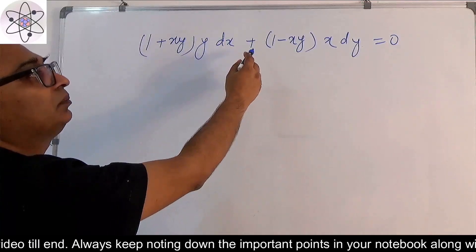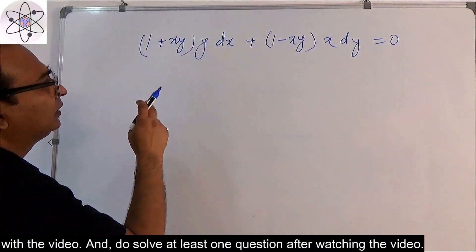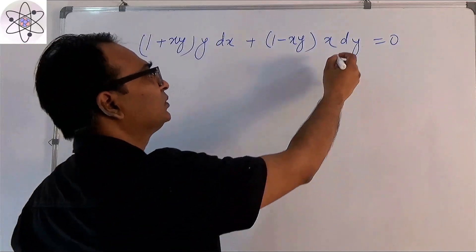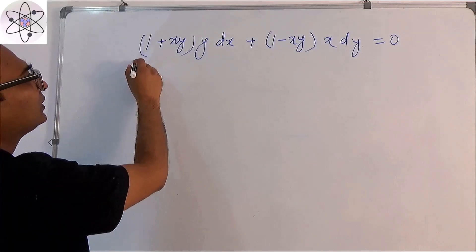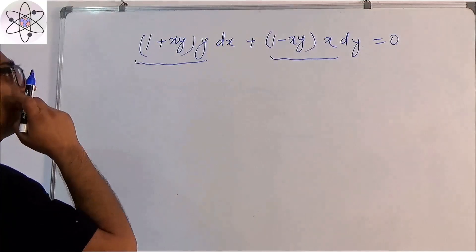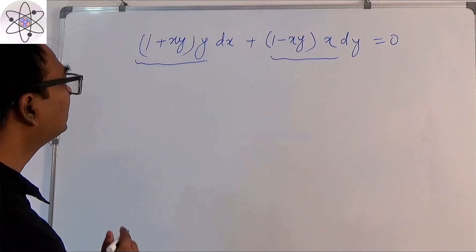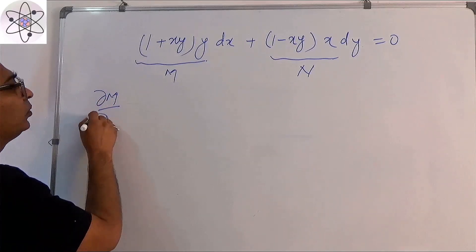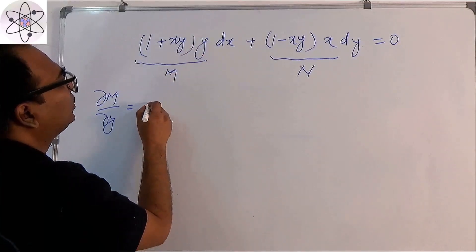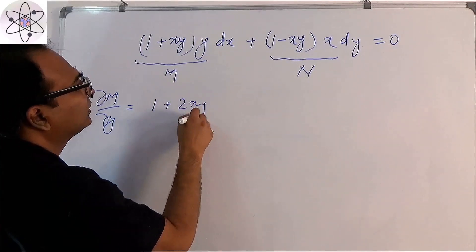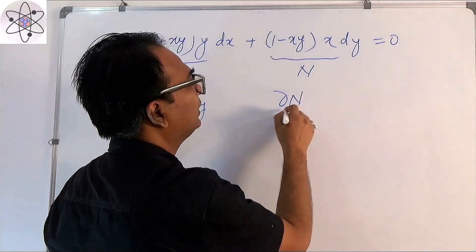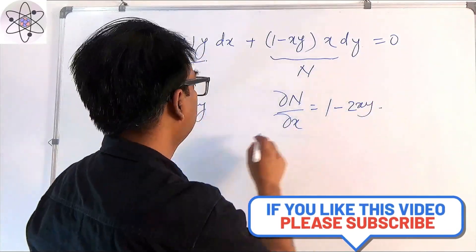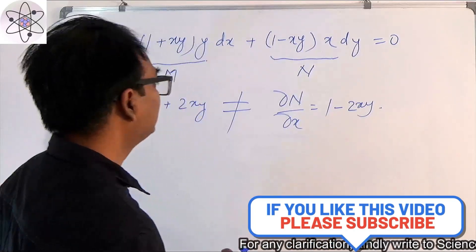Let's take an example to understand this. Our example is: (1 + xy)·y dx + (1 - xy)·x dy = 0. The best way to understand is to first take del M by del y and del N by del x of this equation and see whether it is exact or not. This is M and this is N. So del M by del y equals y(1 + 2xy) giving 1 plus 2xy. Del N by del x gives 1 minus 2xy. We see these are not equal, so this is not an exact differential equation.